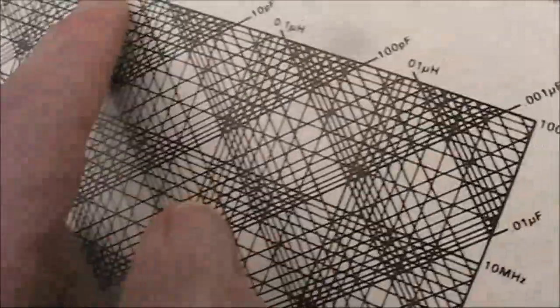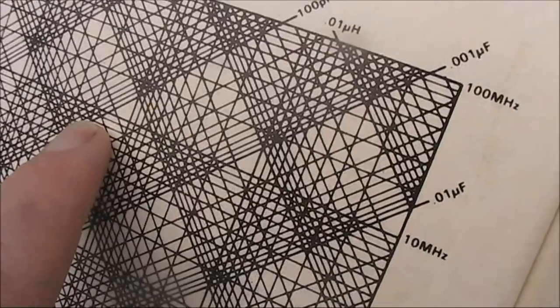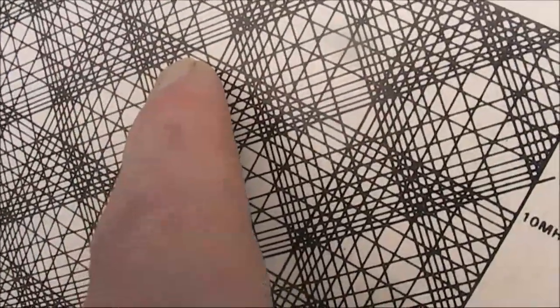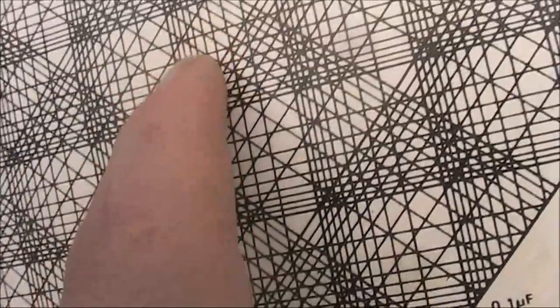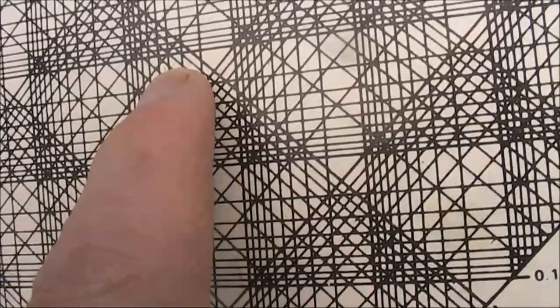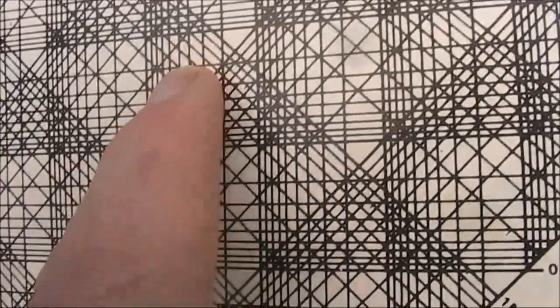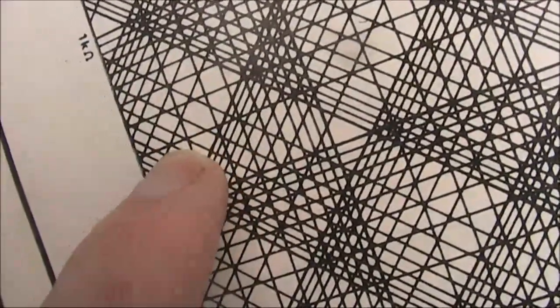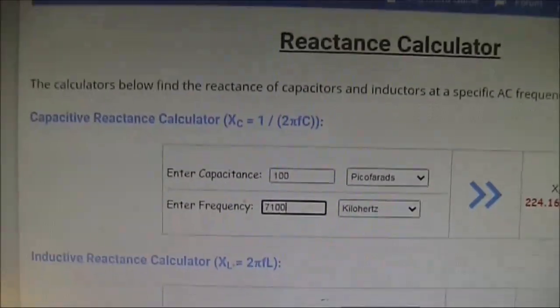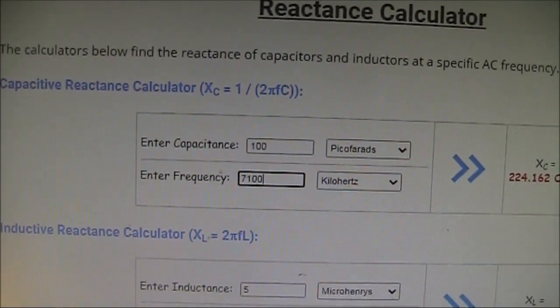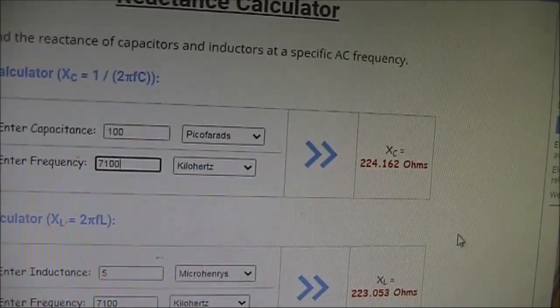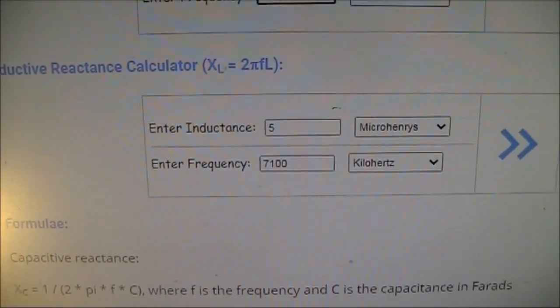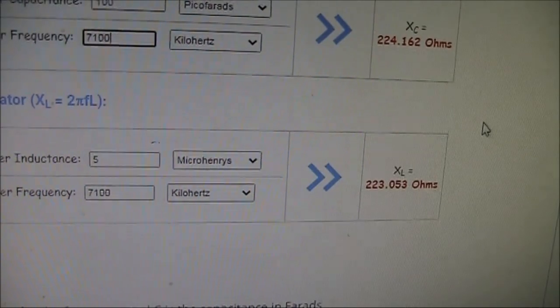Now you find the point where they intersect, which is about here, and then if you want the reactance, then it's more or less straight down this line here. So we'll go down this line, and it's around 200 ohm. You can see here the capacitor, 100 picofarad, just over 7 megahertz, 224 ohm. So our guess of 200 from that table was about right. And same for the inductor, 5 microhenry at 7 megahertz, 223.